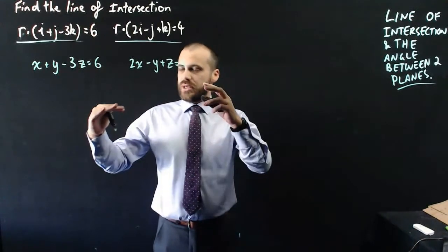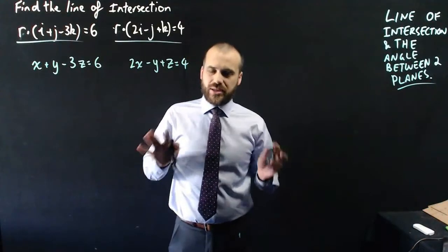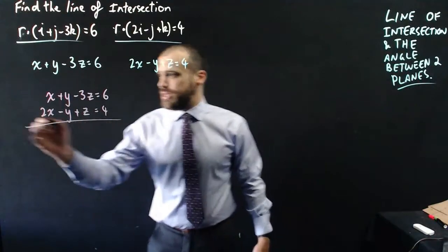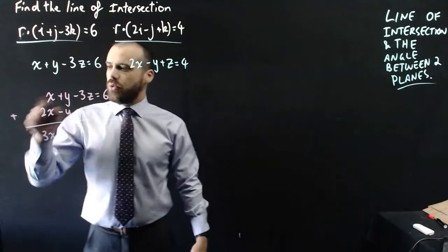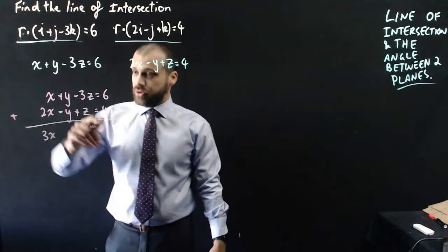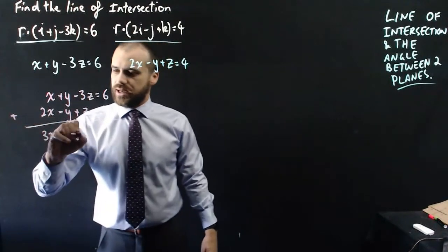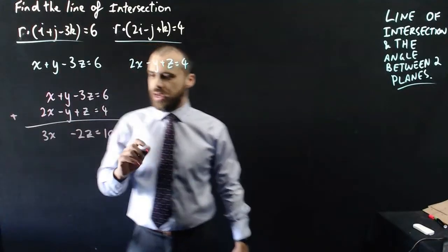Now, what I can do is subtract one from the other and make something cancel out. It doesn't matter what cancels out. Looking at these two equations, it's going to be easier if I add them together. Because x plus 2x will be 3x. y plus negative y be 0. So, that gets rid of my y. And negative 3z plus z is negative 2z equals 6 plus 4, which is 10.